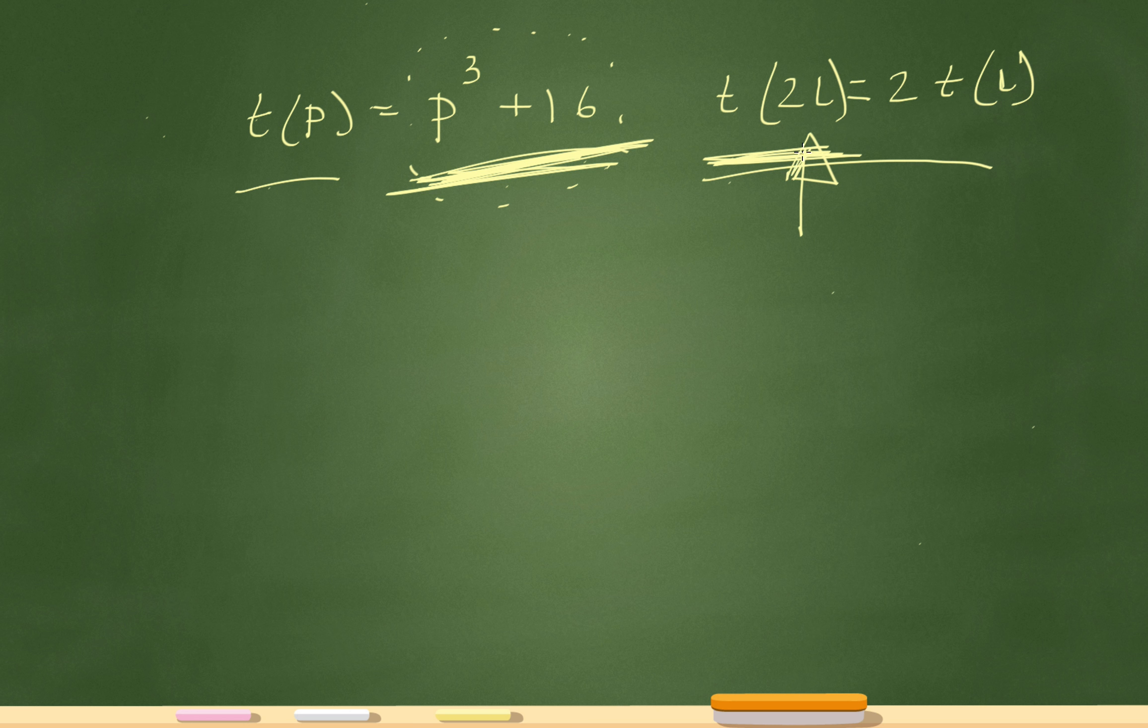Now, whatever is inside the parentheses, you replace that with a variable there. So here the variable is p, right? So I'm going to replace that 2l with that p. So check this out. It'll be 2l cubed plus 16.